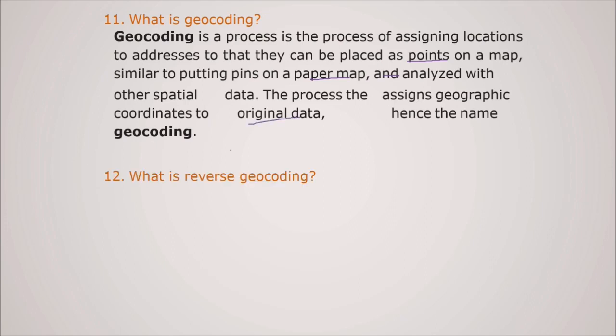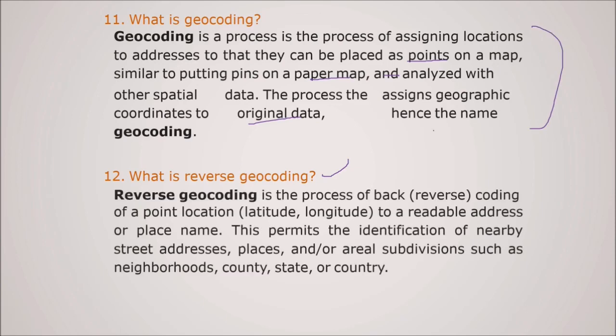What is reverse geocoding? The reverse of geocoding. Reverse geocoding is the process of back or reverse coding of a point location, that is longitude, to a readable address or a place name. So this permits the identification of nearby street address, places or an area subdivision such as neighborhood, county, state or country.